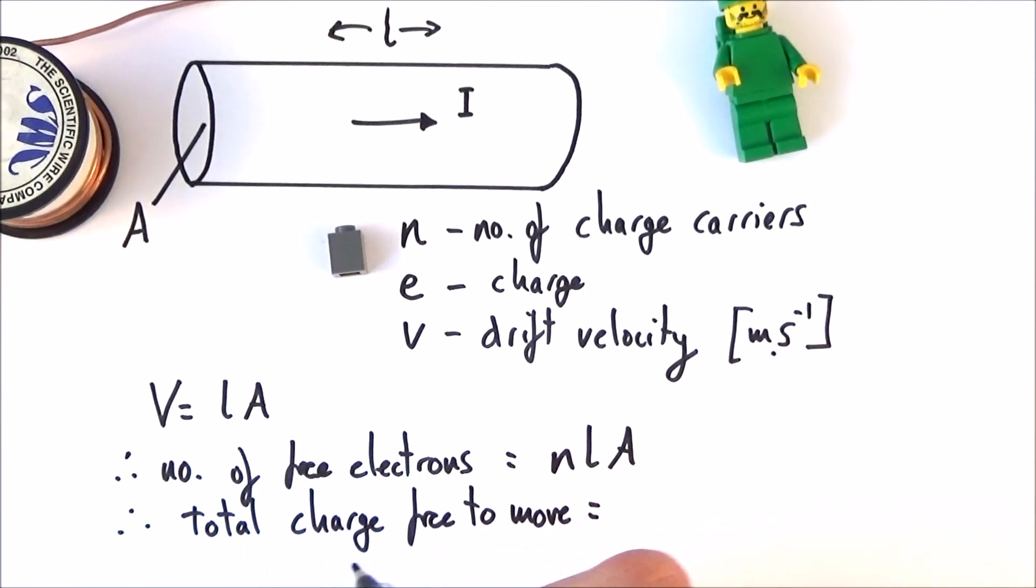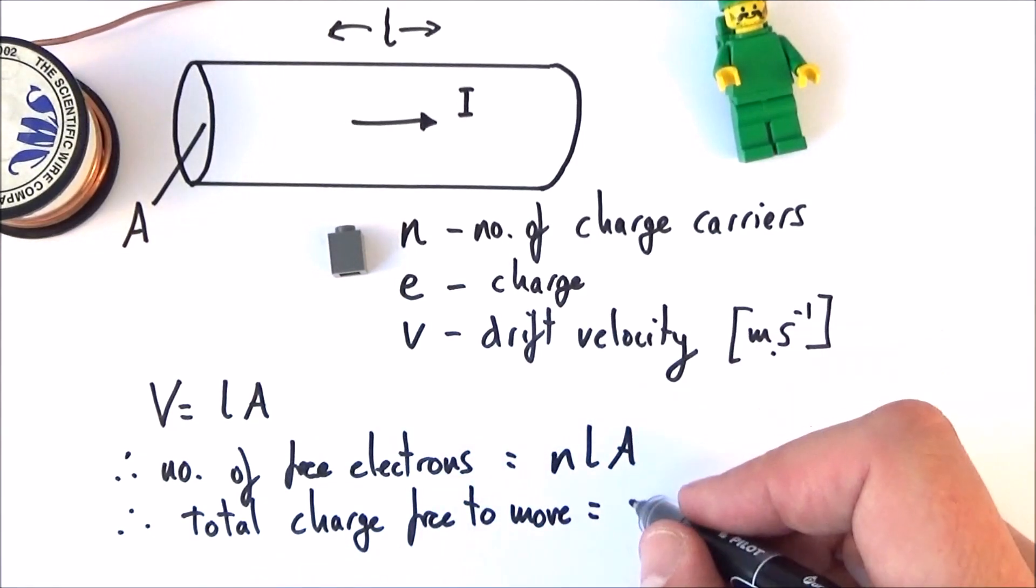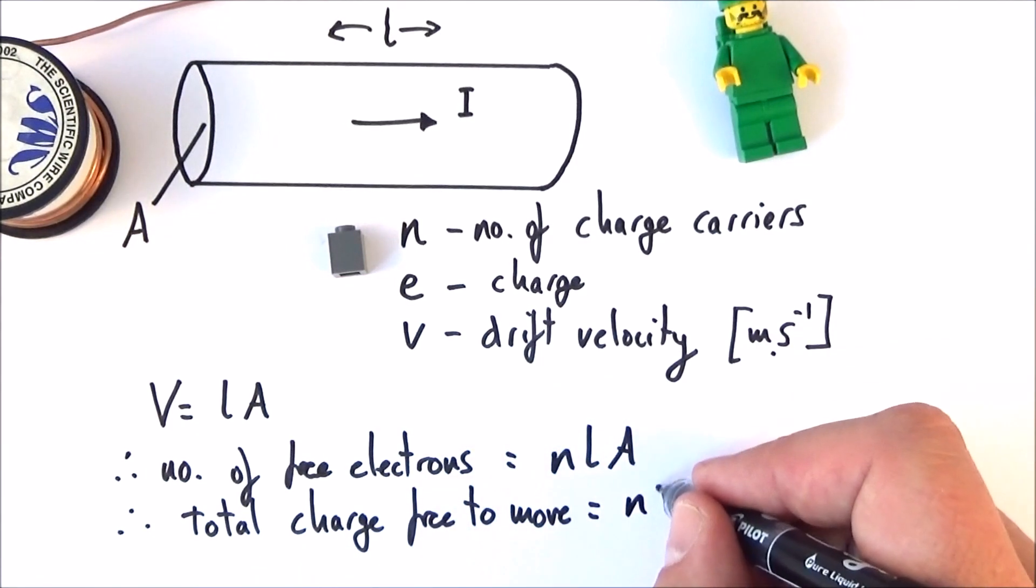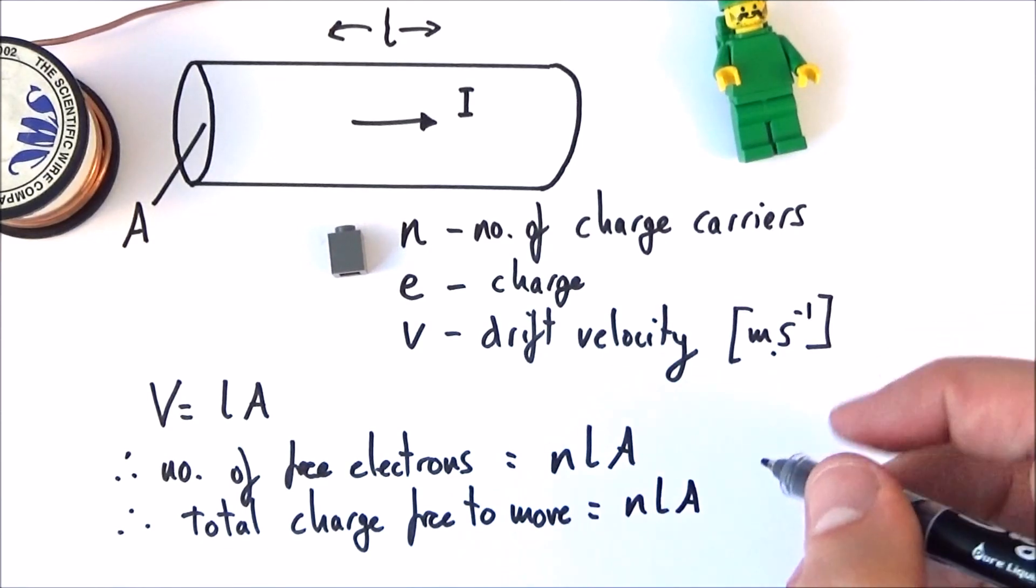And therefore, this means that the total charge, which is free to move, is equal to the number of charge carriers in total, multiplied by the individual charges on each one, which is nLAe.